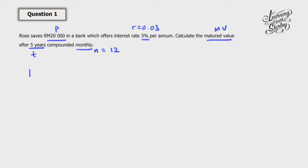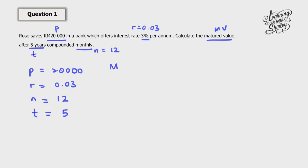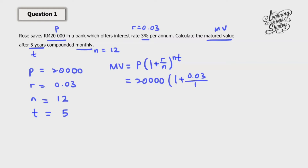We're going to write down all the information given: P, R, N, and T. So P is 20,000, R is 0.03, N is 12, and T is 5 years. We're going to put these into the formula: MV equals to P bracket 1 plus R over N, the whole thing to the power of NT. So that's 20,000 times 1 plus 0.03 over 12, to the power of 12 times 5.